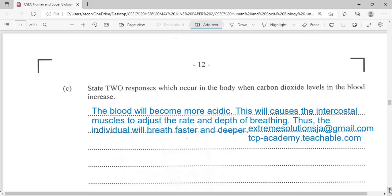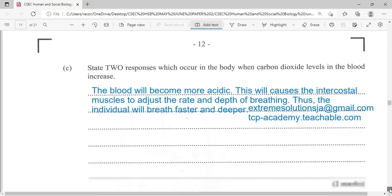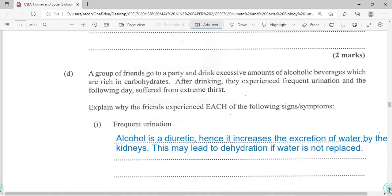State two responses which occur in the body when carbon dioxide level in the blood increases. The blood will become more acidic. This will cause the intercostal muscles to adjust the rate and depth of breathing, thus the individual will breathe faster and deeper. There will also be increase in the heart rate or the beating of the heart. The person might breathe with mouth open or panted breathing, the body temperature will be up, the person will be sweating.